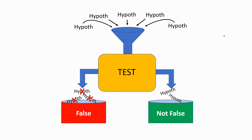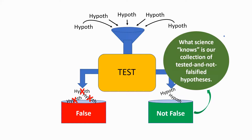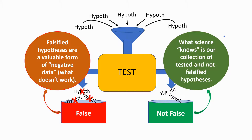So here is our big scientific machine. It's taking in many different kinds of hypotheses, testing them severely, and sorting them into bins labeled 'false' or 'not false.' What science knows is our collection of tested and not falsified hypotheses — this is one very valuable sort of information we get out of it. It is equally important and informative, however, to get a collection of falsified hypotheses. These are also a source of information because they represent negative data — we now know what doesn't work. This is the second kind of information we get by testing hypotheses with the principle of falsification.